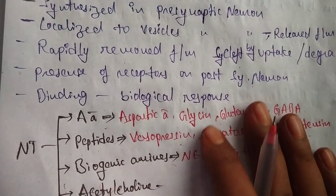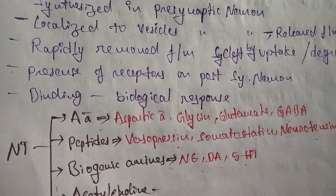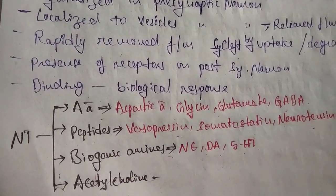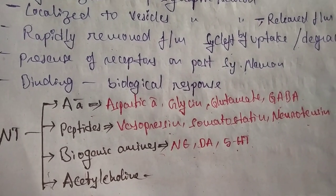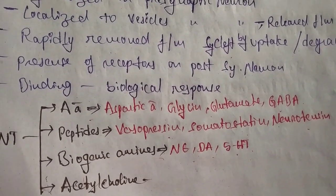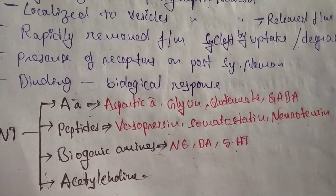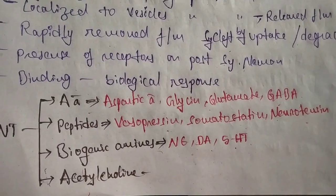This is the general introduction of neurotransmitters in CNS. In the next class, we will see in-depth about the GABA neurotransmitter. Thank you.